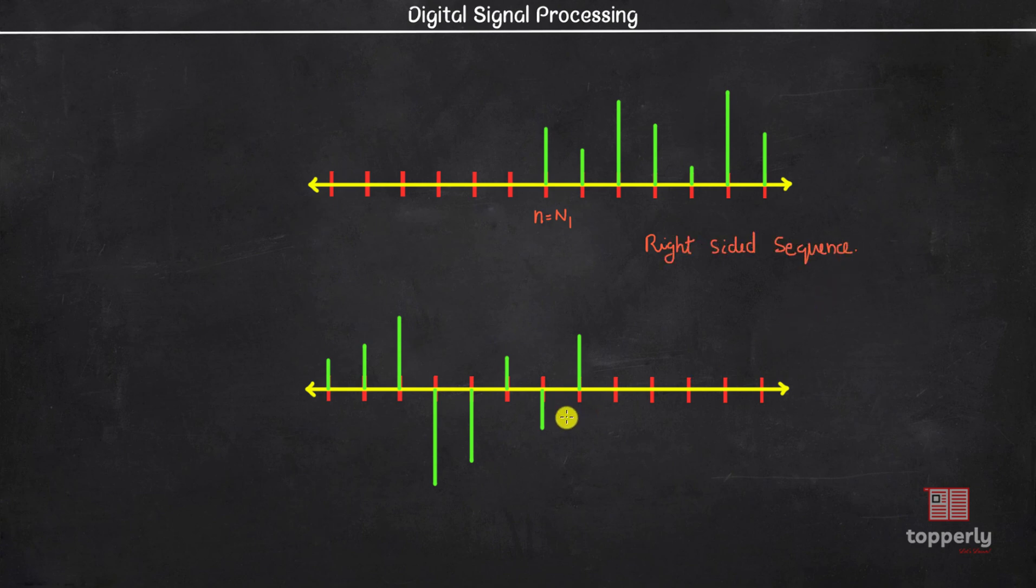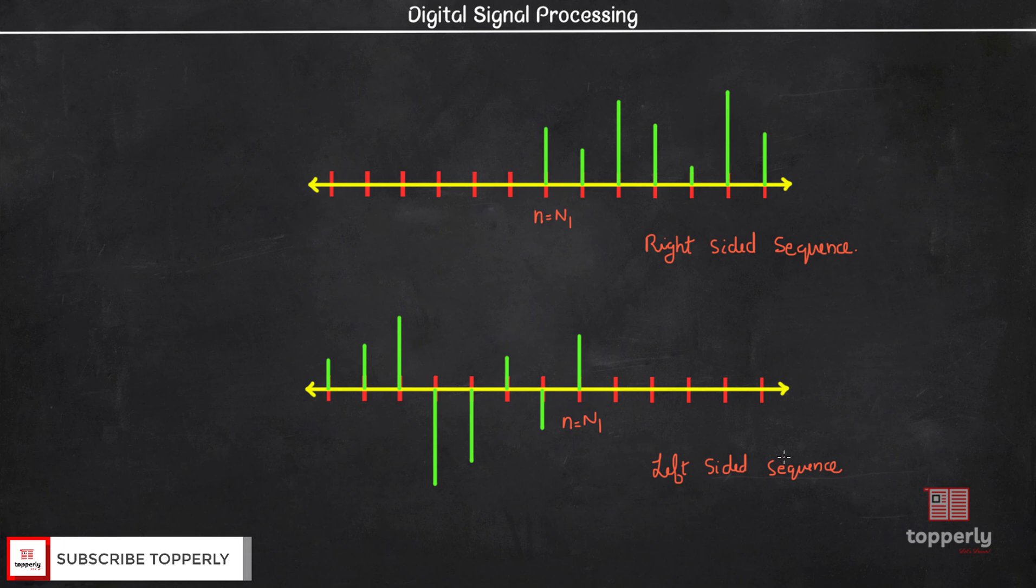On the other hand, if the signal exists only on the left of n1 and is 0 on the right side, then this kind of sequence is called left-sided sequence. We also have two-sided sequences. In this case, the sequence is defined for all the values of n in the range minus infinity to plus infinity. These three definitions, right-sided sequence, left-sided sequence and two-sided sequences are purely theoretical and do not have any practical implication. But it can come as a question for your university exams. So, just keep it in the back of your head, okay?